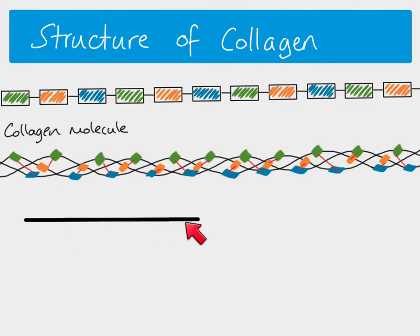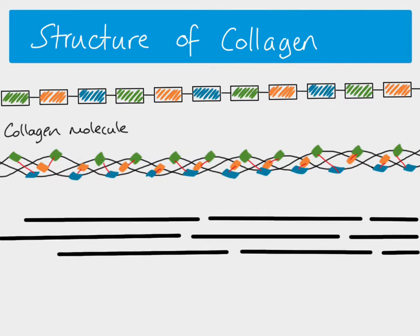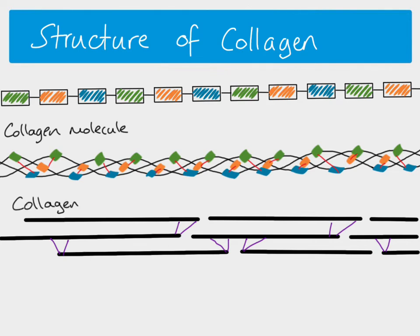In collagen, you have lots of these collagen molecules — each representing a triple helix — and they line up adjacent to one another with small gaps in between. This gap is offset, so they aren't all lined up with gaps in the same place. That also helps with the strength, a little bit like laying a wall of bricks where you offset the bricks so you don't have gaps in all the same places. To hold all of those collagen molecules together, you have lots of covalent bonds — very strong bonds holding the collagen molecules together. When we have lots of collagen molecules held together by covalent bonds, we call this whole structure a collagen fibril.